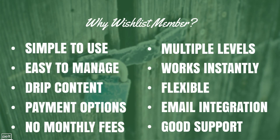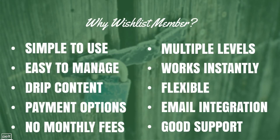It's easy to manage your members — to delete accounts, add new accounts, all that sort of stuff. You can drip content out to people over time, so if you don't want them to see part two of your course until they've been a member for a month, you can delay that. They've got multiple payment options, including a great option where you can use an external payment provider that doesn't integrate with them but actually works the same as integrating with Wishlist Member. They've got no monthly fees — it's just a one-off payment. You can manage multiple levels of users: silver, gold, platinum, giving different content access based on that.